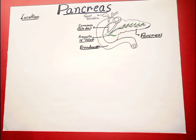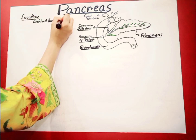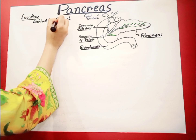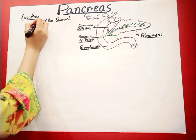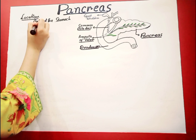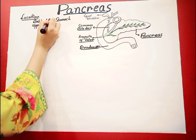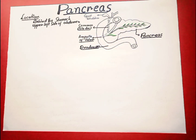The location of the pancreas is just behind the stomach, on the upper left side of our abdominal region. The size of the pancreas is 6 to 10 inches long in an adult and 2 inches wide.